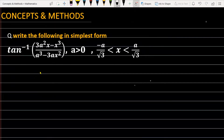The question is to write the following in simplest form. The expression is tan inverse of (3a²x - x³) divided by (a³ - 3ax²), where a is greater than 0 and x is greater than minus a upon root 3 but less than a upon root 3. Let's see how we are going to solve this problem.